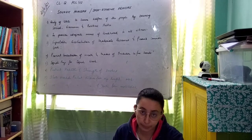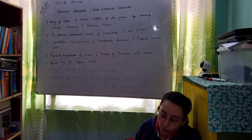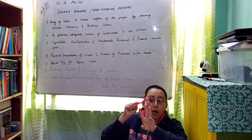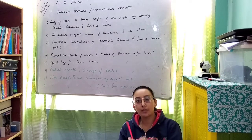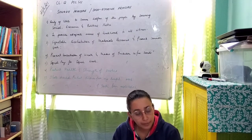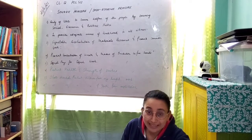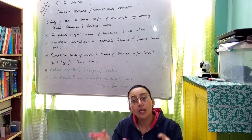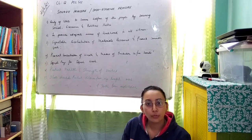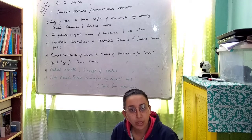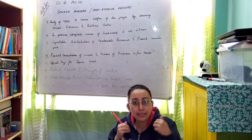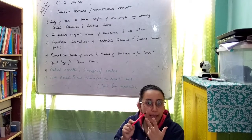Principle two: the state should provide adequate means of livelihood to all citizens. Livelihood particularly deals with three important things — food, clothing, and shelter. Every Indian citizen should have these provided. Educated youth should get jobs, and even uneducated youth should have government policies to absorb them. When a person earns wages, they can secure food, shelter, and clothing for themselves and their family.